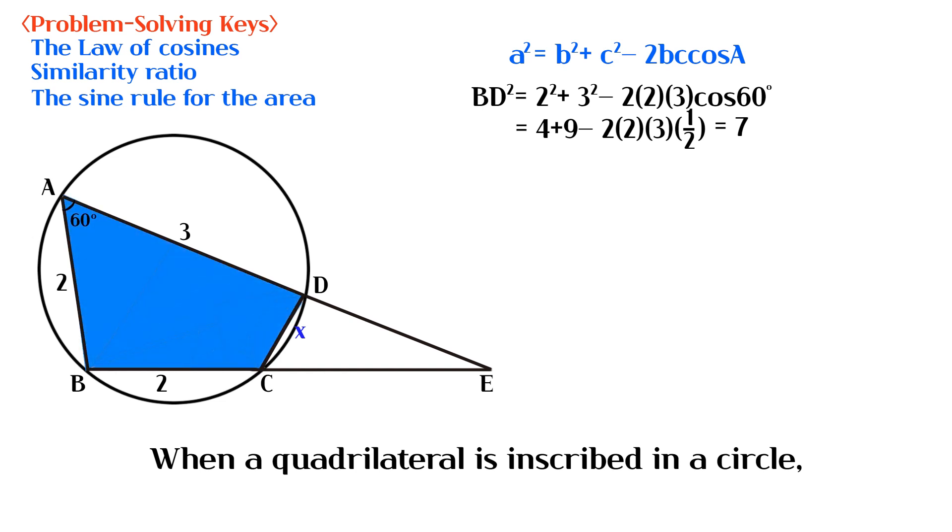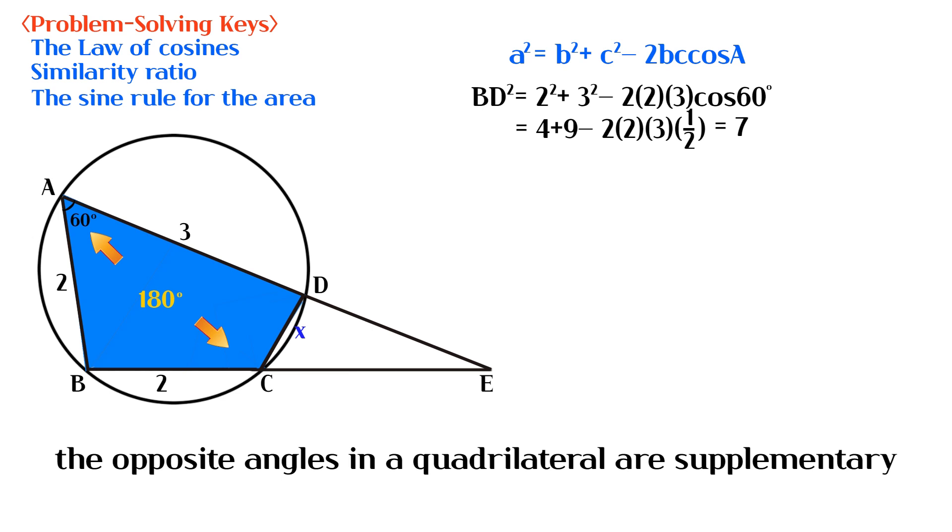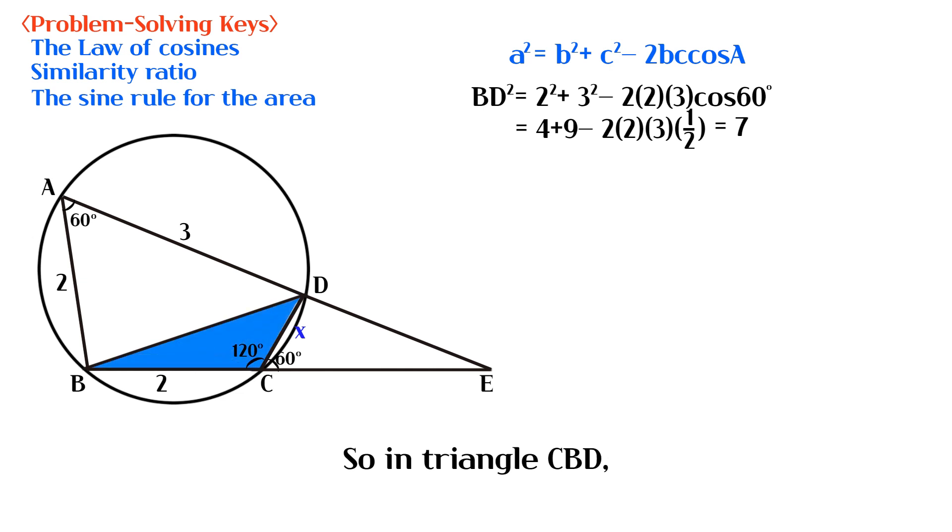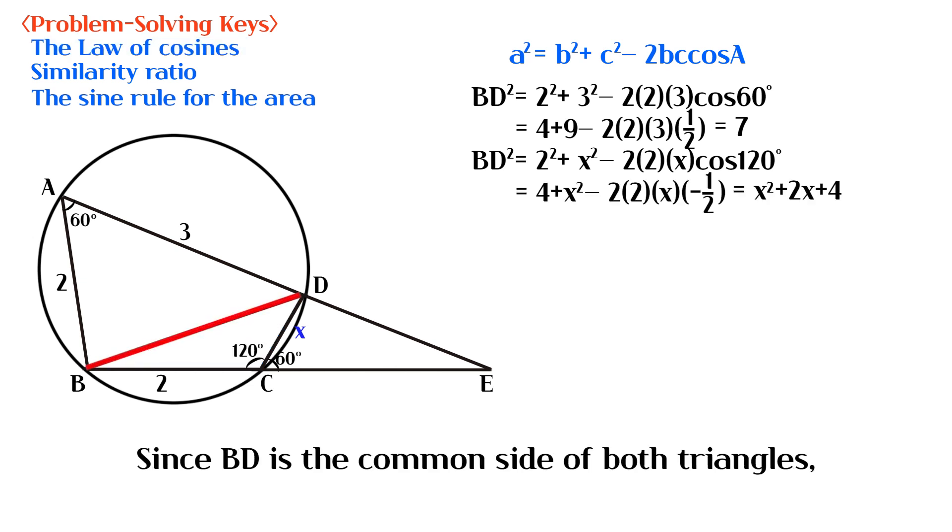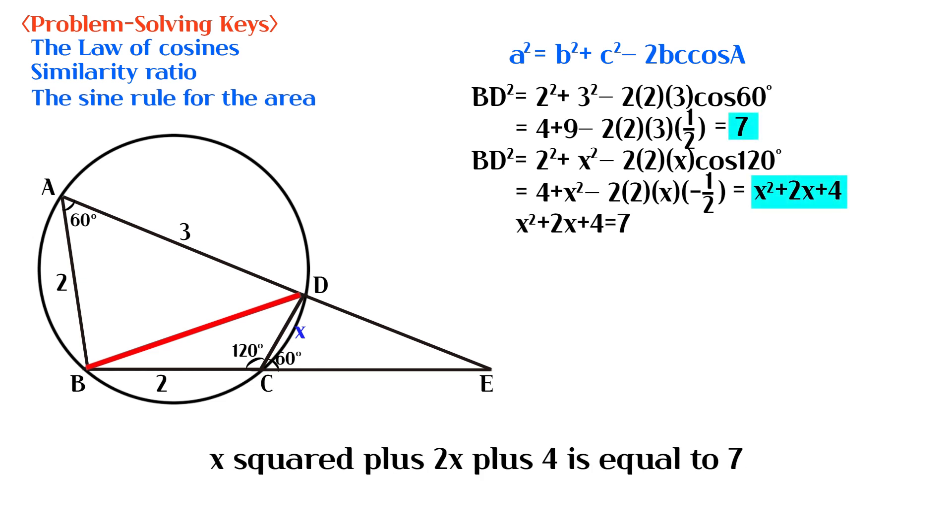When a quadrilateral is inscribed in a circle, the opposite angles in a quadrilateral are supplementary. So in triangle CBD, BD squared is equal to 2 squared plus x squared minus 2 times 2 times x times cosine of 120 degrees. Since BD is the common side of both triangles, x squared plus 2x plus 4 is equal to 7.